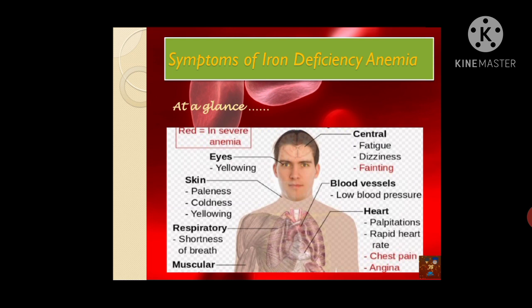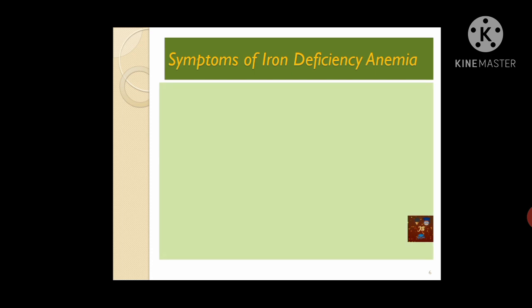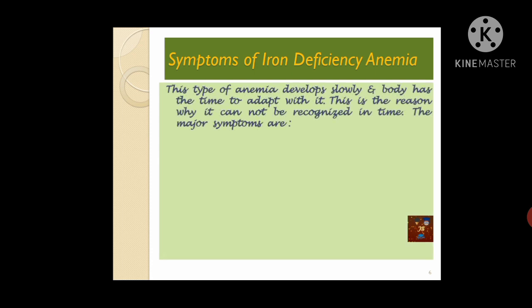Let's discuss about the symptoms of iron deficiency anemia. At a glance, we can see in the picture that different body aspects have been affected, like the eye, skin, respiratory system, muscular system, blood vessels, low blood pressure, the heart, and also the central nervous system. This type of anemia develops very slowly, and the body adapts to it, so unlike other diseases it may not be profoundly diagnosed early.